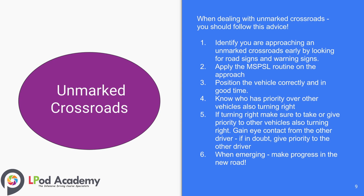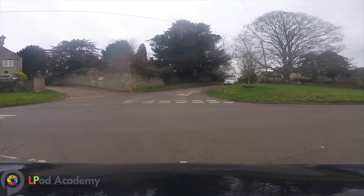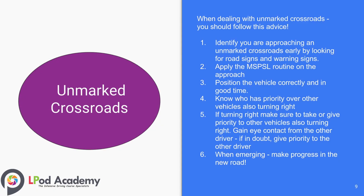When dealing with unmarked crossroads, you should follow this advice: identify that you are approaching an unmarked crossroads early by looking for road signs and warning signs. Apply the MSPSL routine on the approach and position your vehicle correctly and in good time. Understand who has priority over other vehicles also turning right. If turning right, make sure to take or give priority to other vehicles also turning. You could also gain eye contact from the other driver. If in doubt, give priority to the other driver, then make progress in the new road.